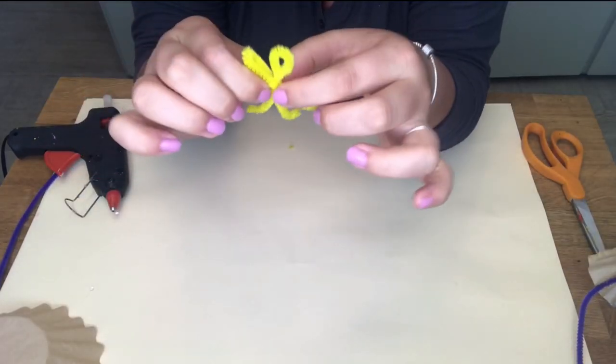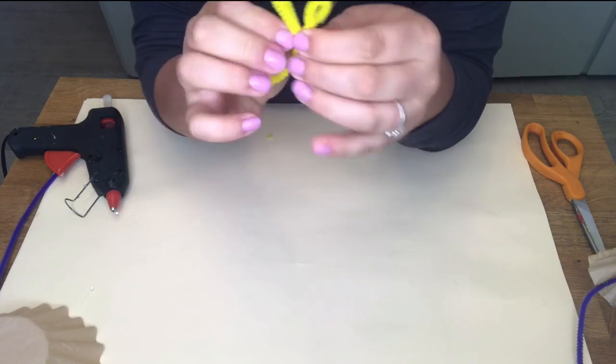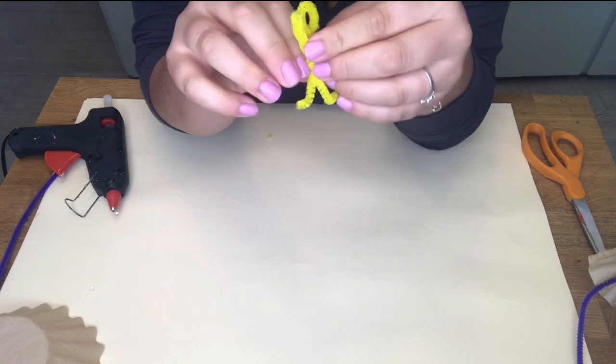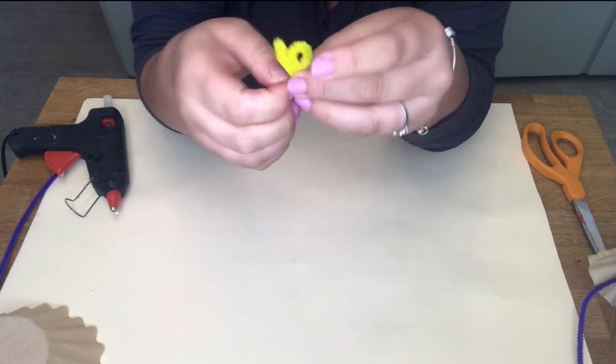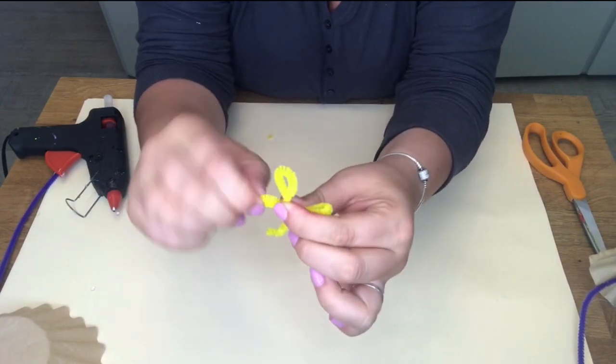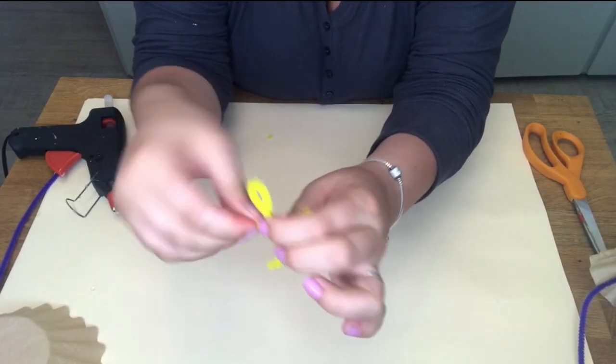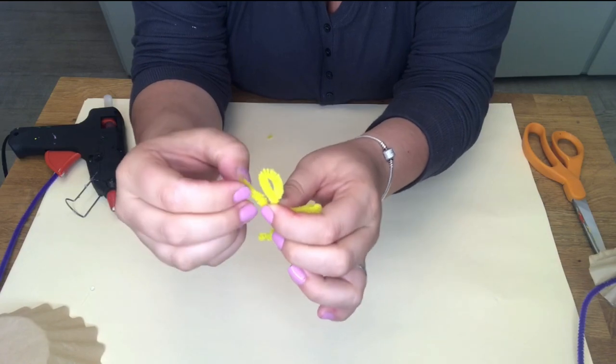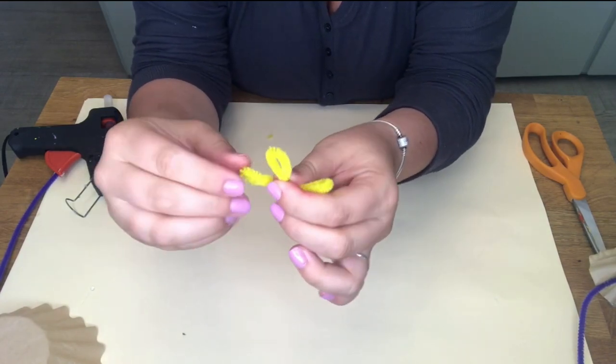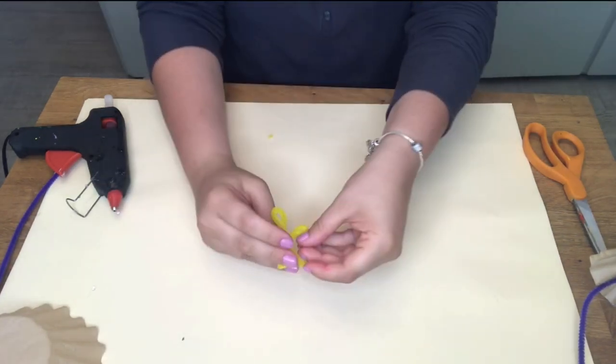And all you're going to do is you're going to twist the ends of each arm to the body of the Parachute Man. Do this for both ends. So now we're going to make our arms. So twist the arms just as we did for the body and you're going to end up with a circle at the end for the hand. Do this for both hands.